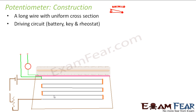Next we have a driving circuit, which consists of a battery, a key, and a rheostat. The circuit shown in brown represents the driving circuit — we have the battery with positive and negative terminals, a key, and a rheostat, which is a variable resistance. It is called the driving circuit because it sends current through the wire. The battery in this circuit provides the current that flows through the long wire and drives the entire functioning of the potentiometer.